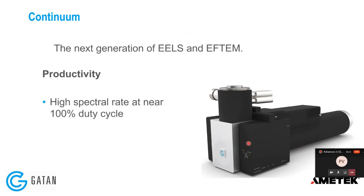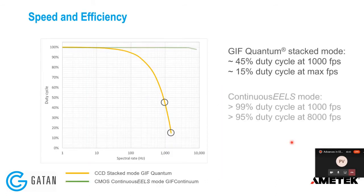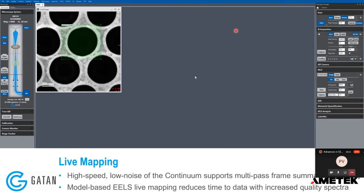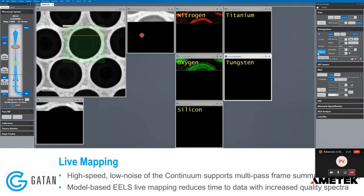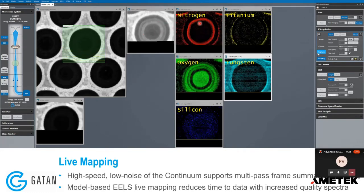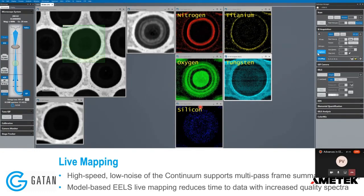The continuum camera is much faster and easy to use, with quite a lot of workflows covered in recent webinars. A major new feature introduced is live mapping. You scan the beam over the area of interest, select the elements, click live map and capture, and tell the software how often to scan the area. The software automatically generates elemental maps — for example, nitrogen, titanium, oxygen, tungsten, and silicon — and you can go back to the same area to improve map quality. This was done with a 3000 eV energy range.